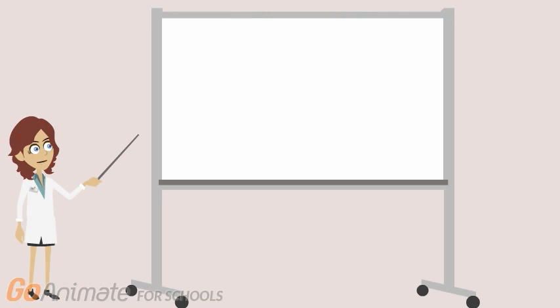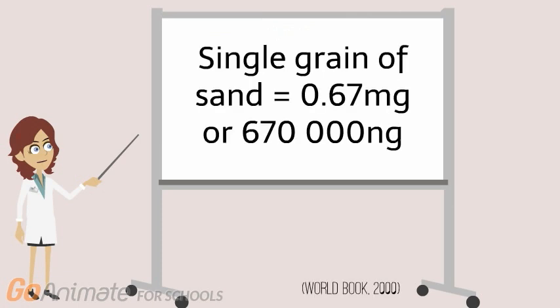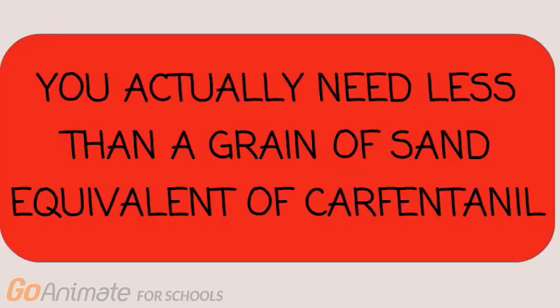That means the total amount circulating in blood could be as much as 22,000 nanograms. The weight of a single grain of sand, according to the World Book Encyclopedia, is 0.67 milligrams, or 670,000 nanograms. This means that even less than a grain's amount of carfentanil can kill you, and the claim is therefore warranted.